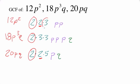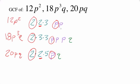What about a 3? It appears on the first and second lists, but not the third — so 3 is not a common factor. For the variables: one p appears on all three lists, but a second p only appears on two lists, so we can only take one p. And q only appears on two of the three lists, so q is not included either. Therefore, the GCF of these three monomials is simply 2p.